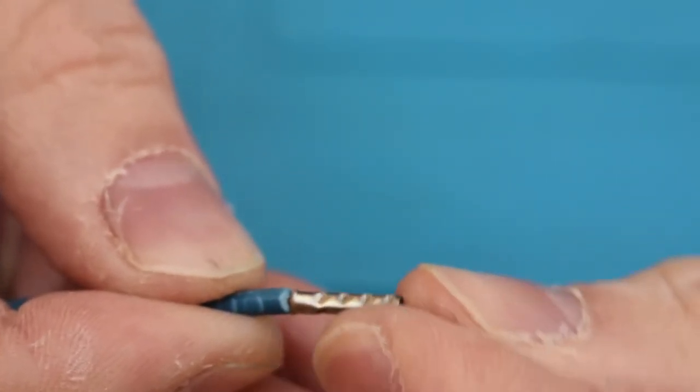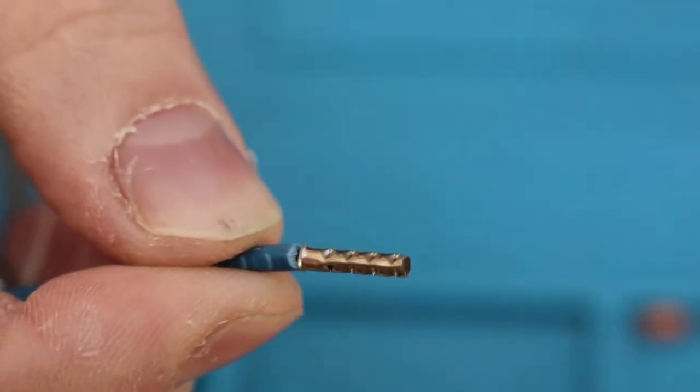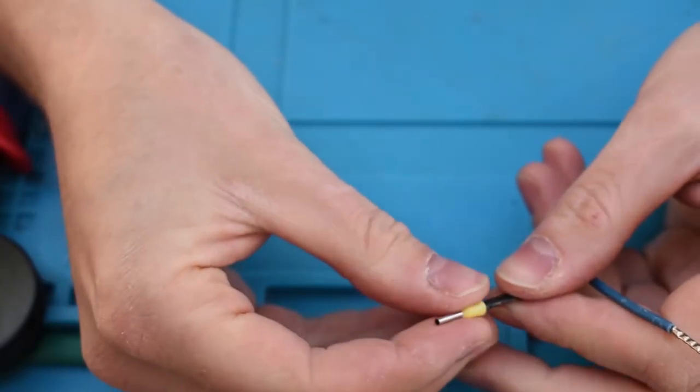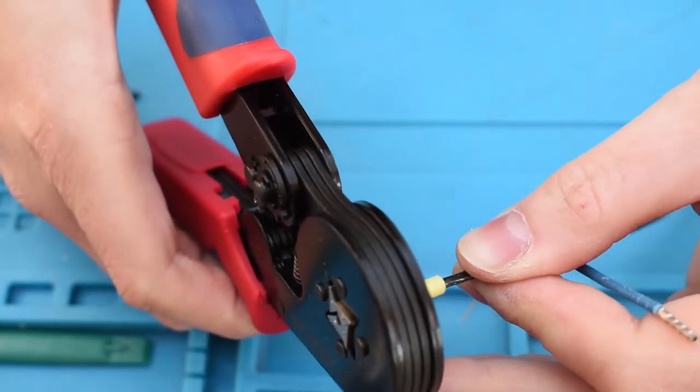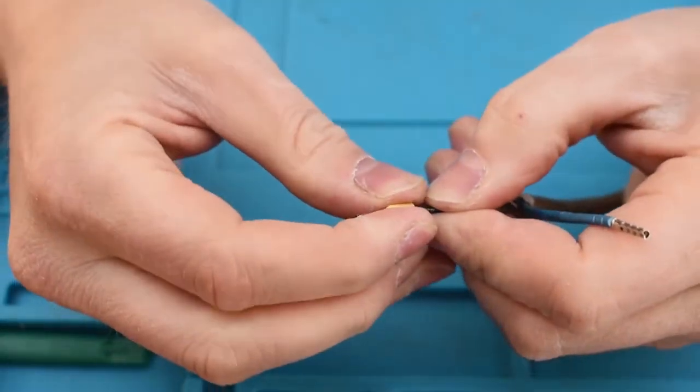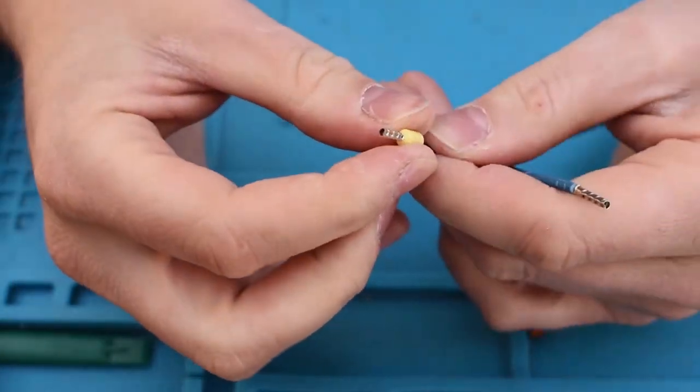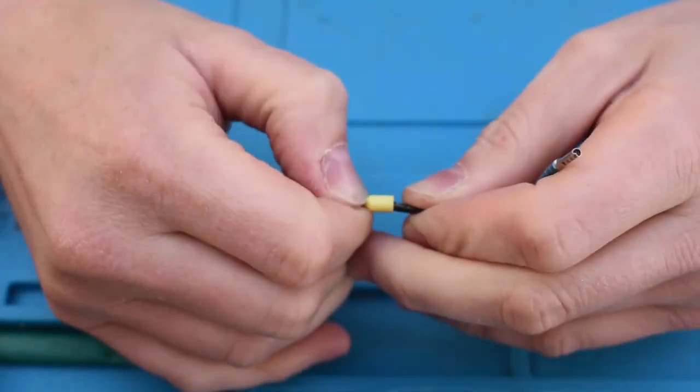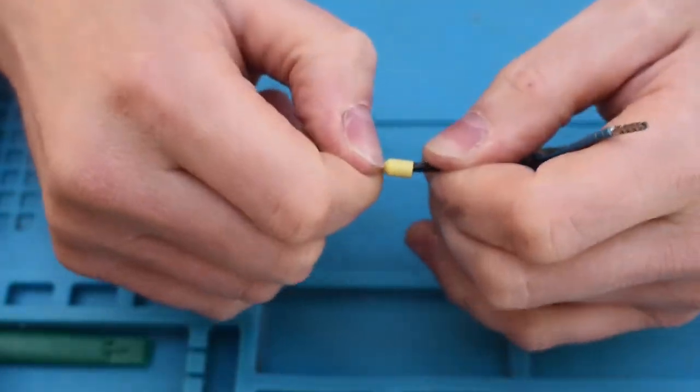That came off quite easily, but you know what, that doesn't matter. That's quite good connection there. Okay, so let's do another one, try a smaller size. Yeah, that's nicely crimped. I mean, you'd expect a tool to do the job, but I was half expecting that not to work, so that's pretty good. Nice solid connection.